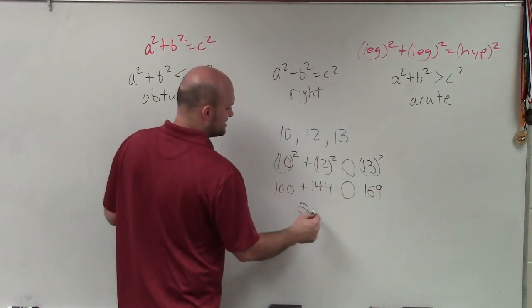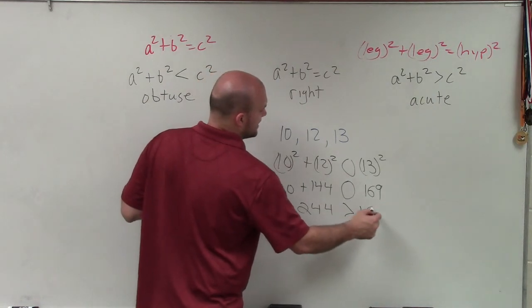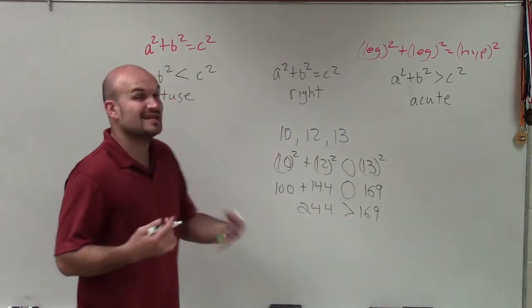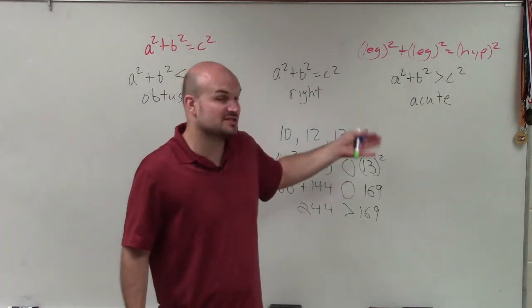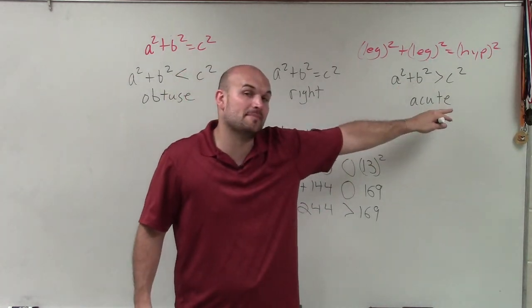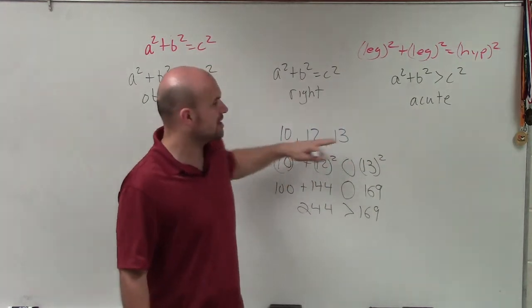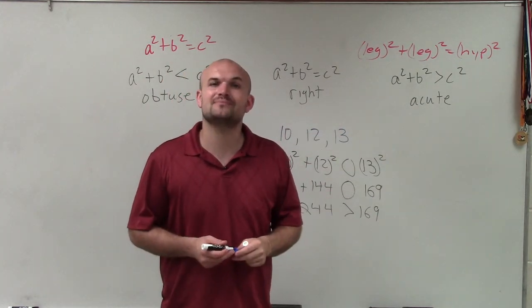When I combine these up, I have 244, which is obviously greater than 169. So since the sum of our legs squared is greater than the hypotenuse squared, these lengths of a triangle produce an acute triangle.